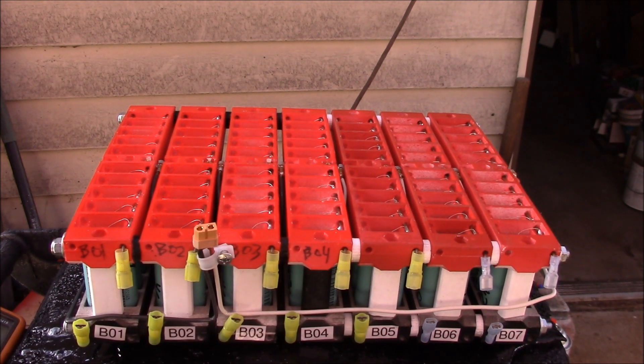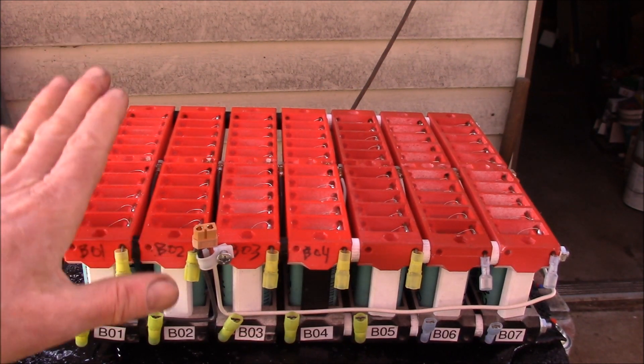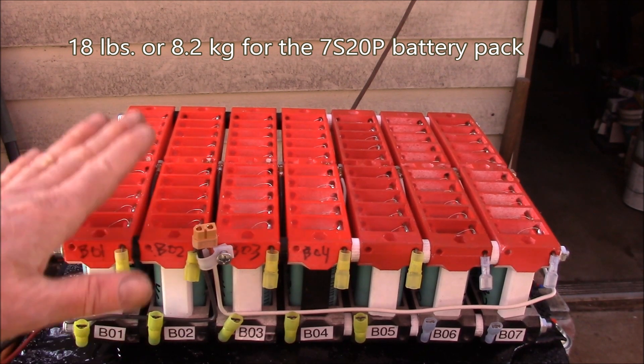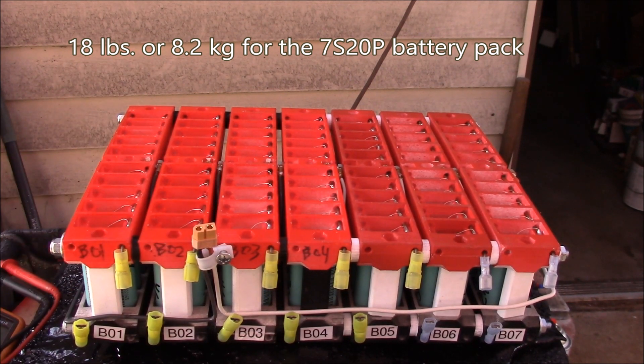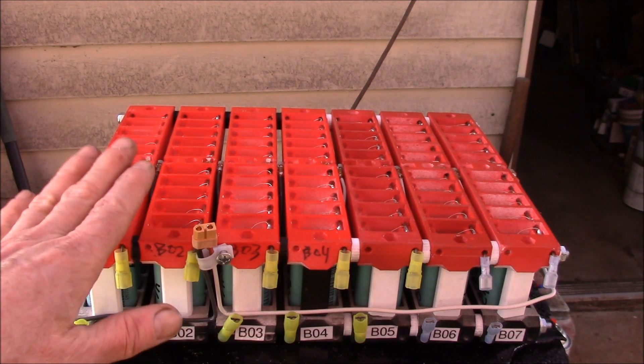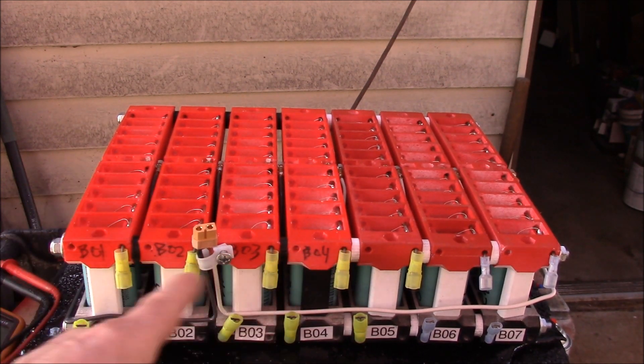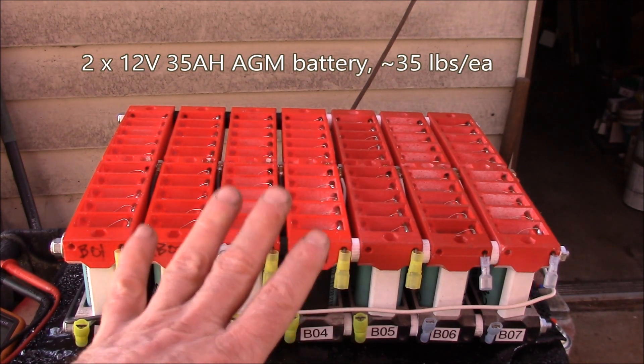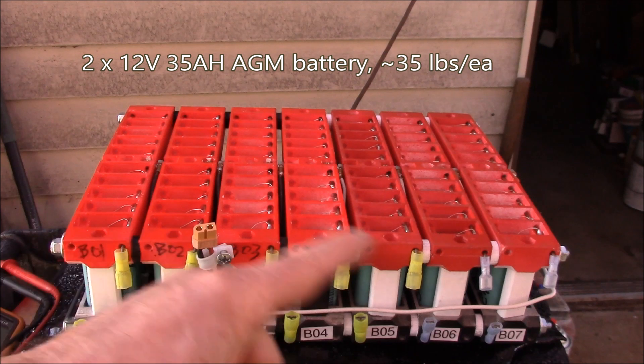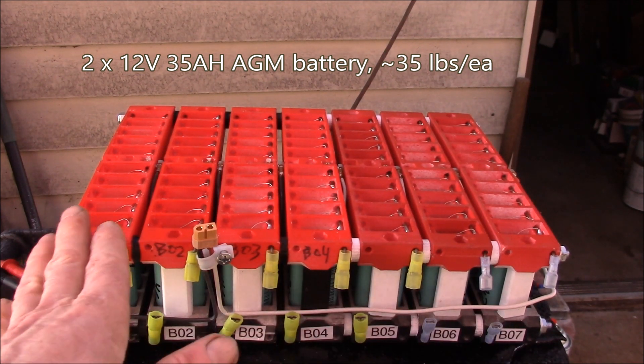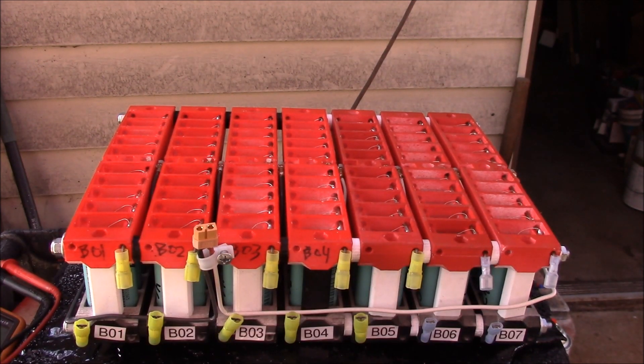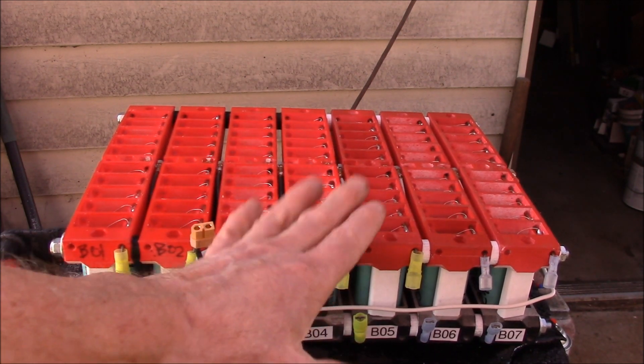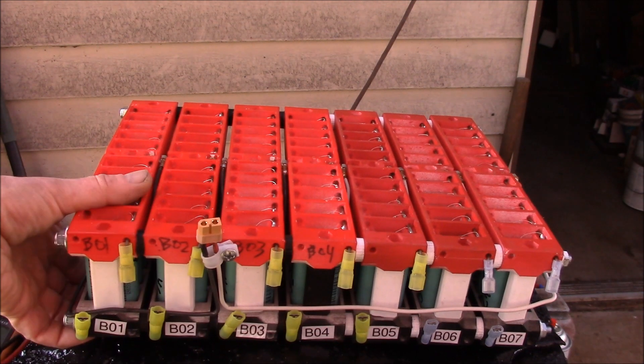But yeah, I think that'll work. Let's see, as far as specs, 18 pounds for the 7s battery which is like 8.2 kilograms. This is about equivalent, at least amp hour wise, to two of my regular batteries, that's about 70 pounds for two of my lead acid batteries to be 35 amp hour and 24 volts.